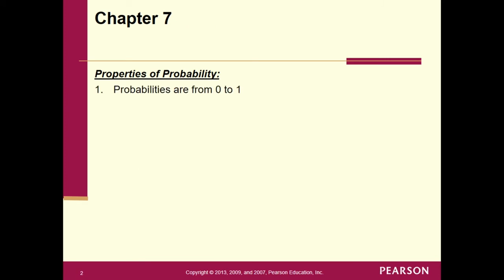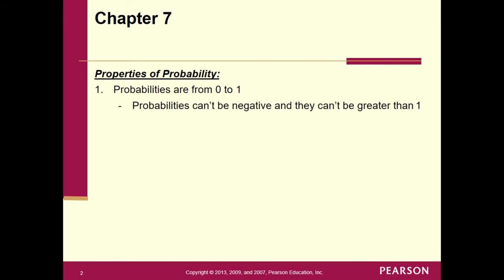Properties of probability: probabilities range from 0 to 1 — and I said from 0 to 1, meaning they can be 0, they can be 1. This also tells us what values probabilities cannot take on. Probabilities can't be negative and they can't be greater than 1. So if you ever calculate a probability and it turns out to be negative or greater than 1, stop — you're thinking about it incorrectly. That cannot occur.